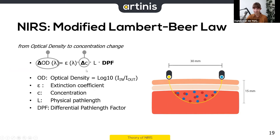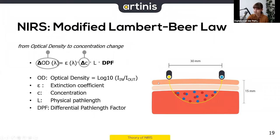Delta C is the change in concentration — what we're actually looking to calculate from this modified Lambert Beer Law. Then we have the physical pathlength, which is the inter-optode distance. With most devices the inter-optode distance is 30 millimeters, so the physical pathlength would be 30 millimeters multiplied by the DPF — the differential path length factor.